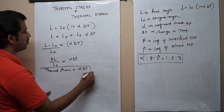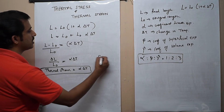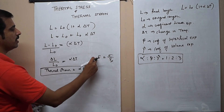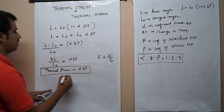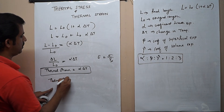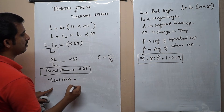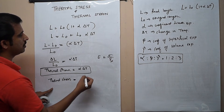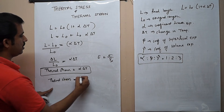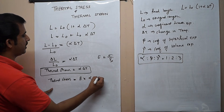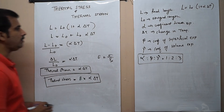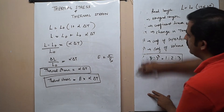We know that Young's modulus E = stress/strain, therefore stress = E × strain (epsilon). Therefore, thermal stress = E × α·ΔT.